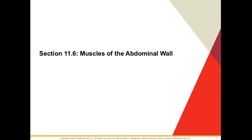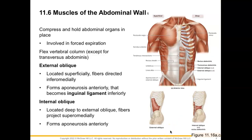Welcome to section 11.6, where we will discuss muscles of the abdominal wall. Our abdominal muscles are there to basically compress and hold our abdominal organs in place, and they can also have a role in forced expiration.